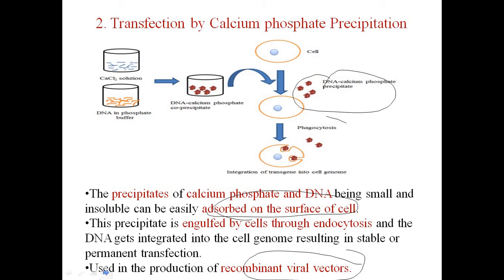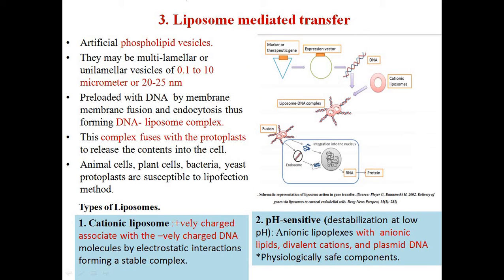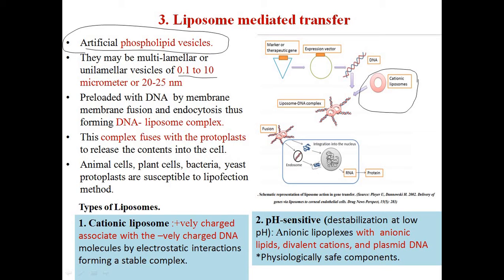The DNA finally reaches the nucleus through phagocytosis, and recombinant viral vectors are obtained through this calcium phosphate precipitation method. Liposome-mediated gene transfer uses artificial phospholipid vesicles of size 0.1 to 10 micrometers or 20 to 25 nanometers. These lipid vesicles or liposomes are loaded with DNA by membrane-membrane fusion, and through endocytosis they form a complex with the protoplast and release content into the cell.